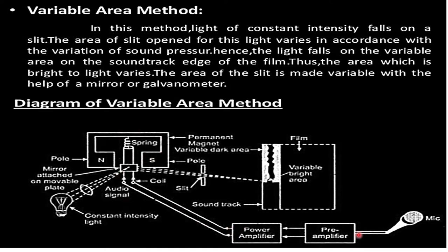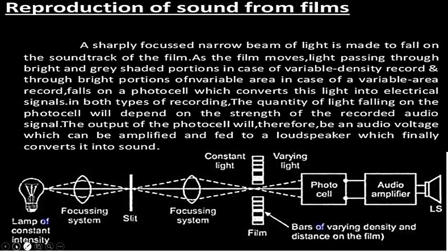The audio signal is given to the pre-amplifier and power amplifier, connected to the coil. Whenever the signal intensity varies, there is a change in the light coming out of the mirror. This light falls on the photographic film, and in this way the variable area defines what the particular audio signal is. This is the variable area method.